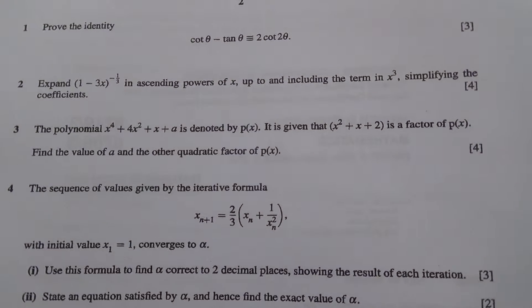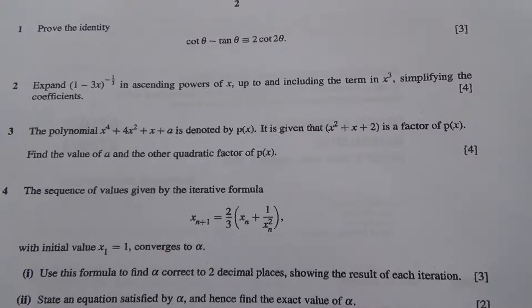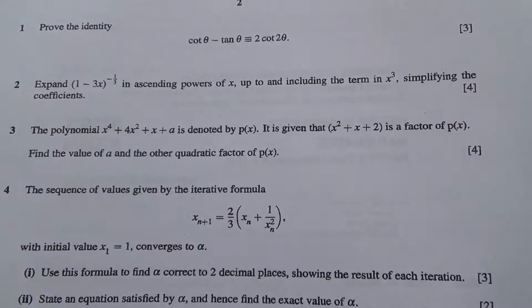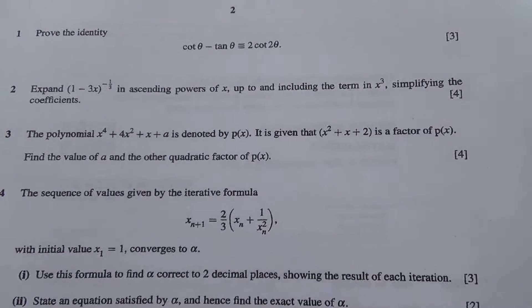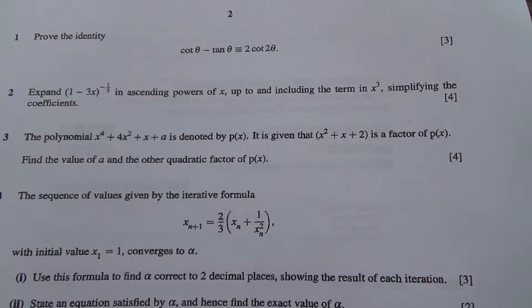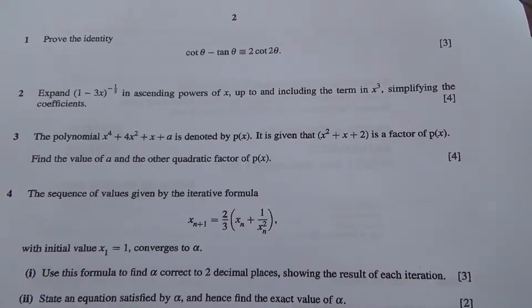Question number 3 taken from June 2002, Advanced Level Maths HSC P3. The polynomial x power 4 plus 4x squared plus x plus a is denoted by px. It is given that x squared plus x plus 2 is the factor of px. Find the value of a and the other quadratic factor of px.